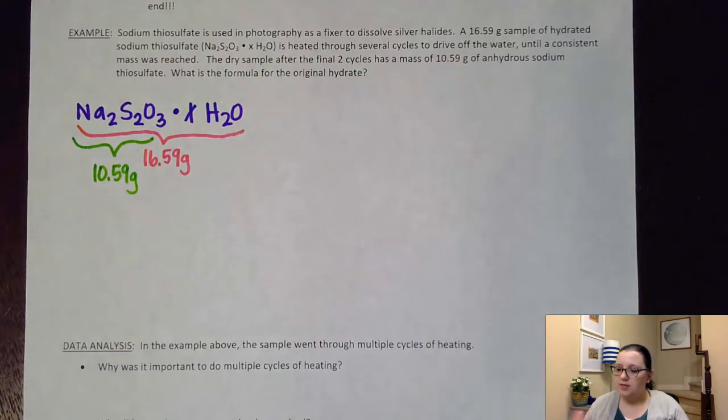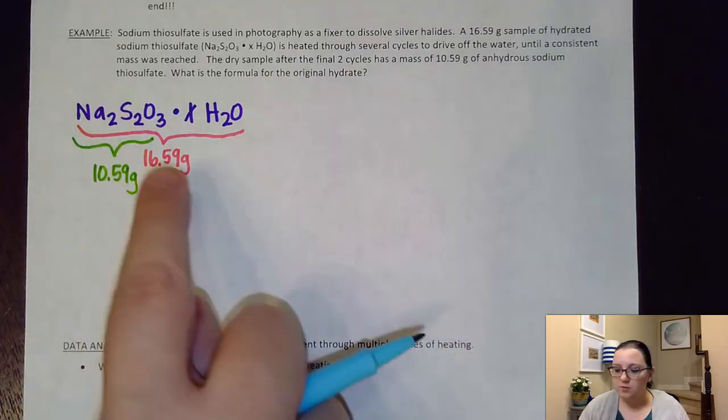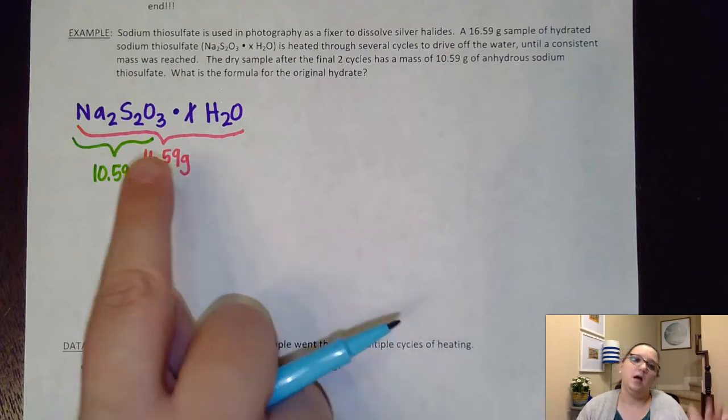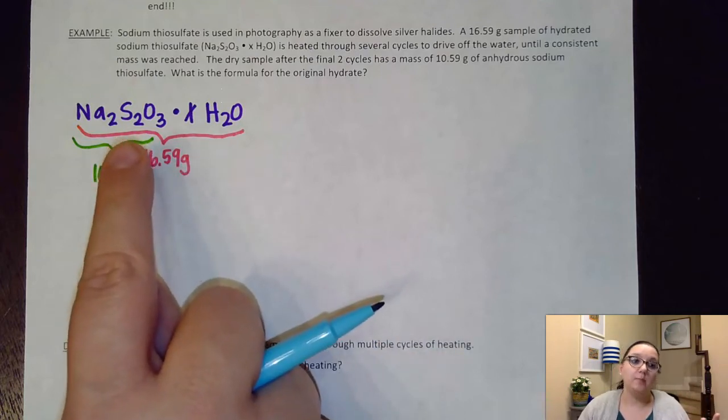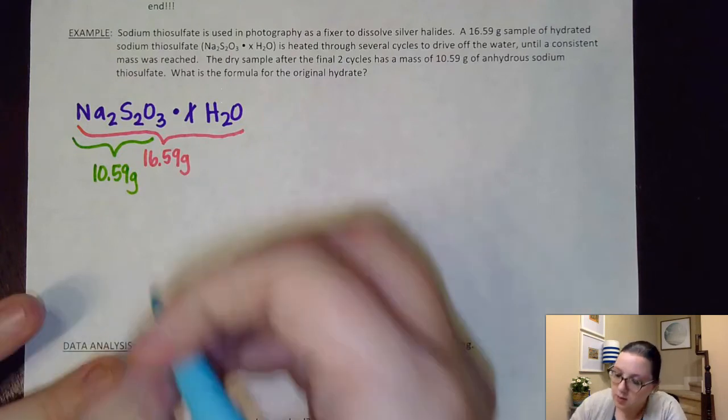So now it says, hey, what's the formula for the original hydrate? So the first thing I would want to do is figure out what mass of water was in this compound. I need a mass ratio of the anhydrous to the water part. Well, if the whole thing was 16.59 and I see that this dry part of the compound here is only 10.59, I know I can subtract those and get the value of just the water.